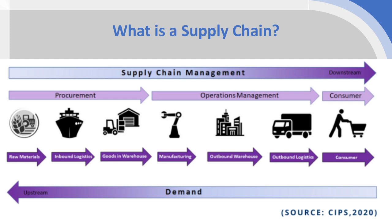It is important to note the distinction between consumer and customer. Because there are multiple different companies involved in any given supply chain, each company is a customer from the company that precedes it in the supply chain. For example, the customers of the farm that grows the sugar cane may well be a sugar cane processing company — they're a customer.